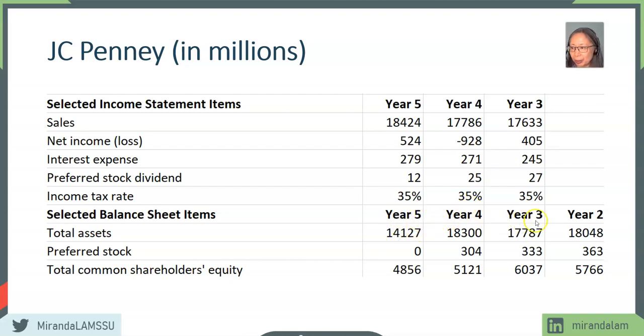For example, average total assets for year three will be the ending balance of year three plus the ending balance of year two, divided by two. This is raw data, so please pause and download the template.